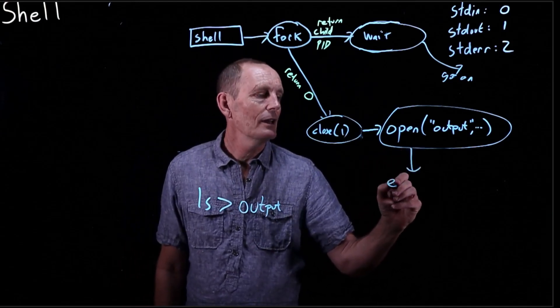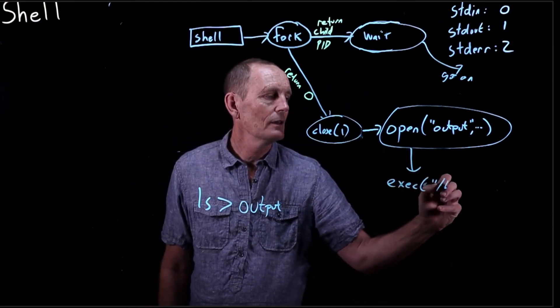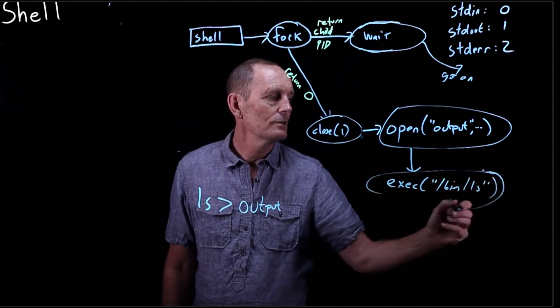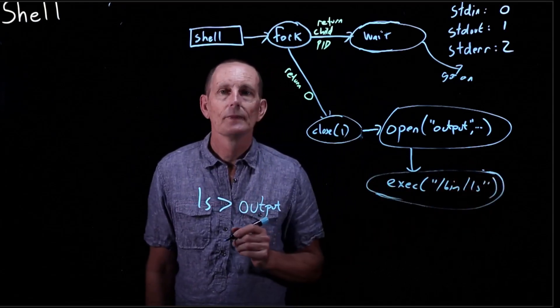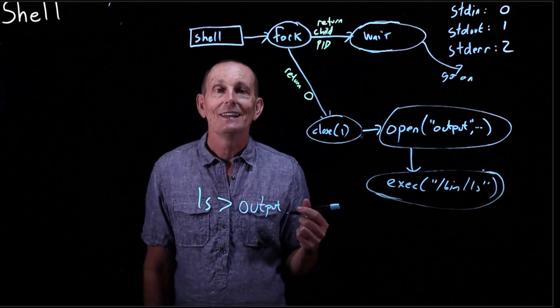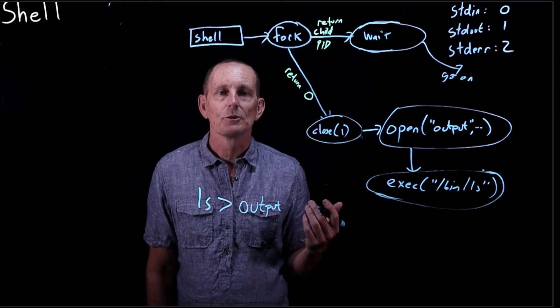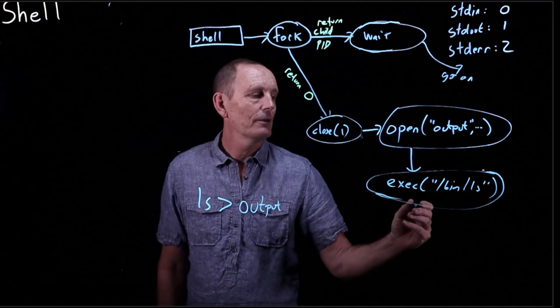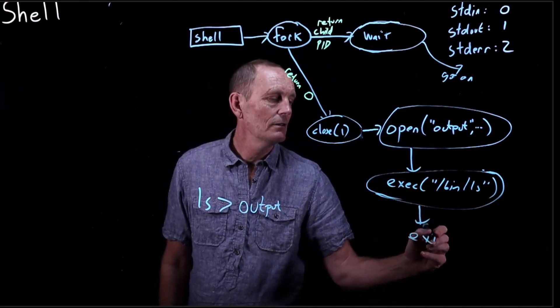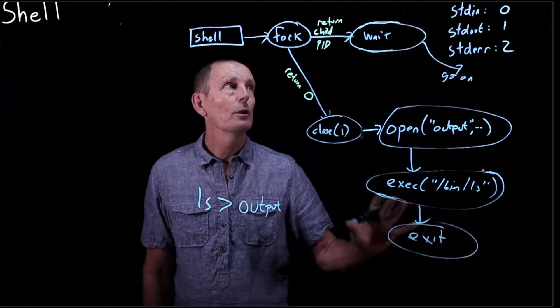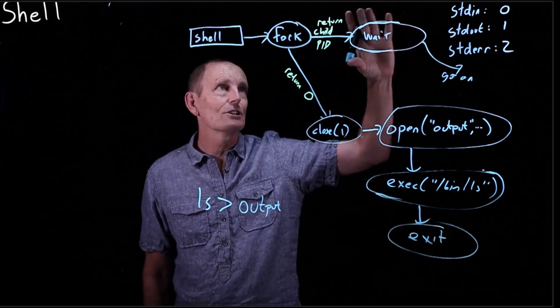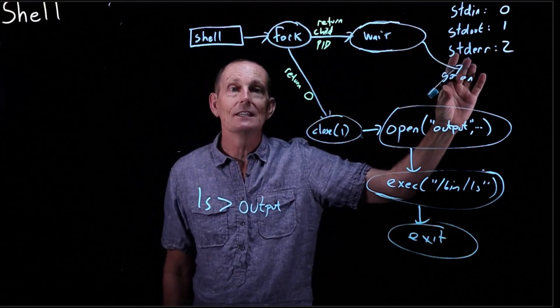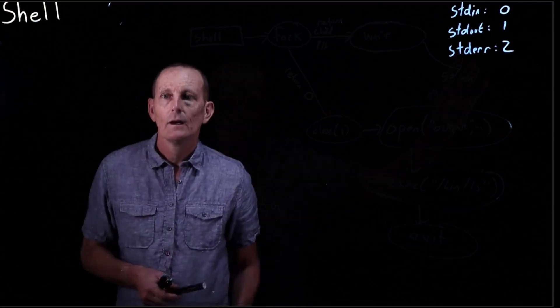At this point now, we can go ahead and exec ls. And now when ls is running, it, as it always does, writes its output to file descriptor 1 to the standard output. But that is now going to not be going to the terminal. It's going to be going to this file. And eventually, that exits. When you return back to the shell, file descriptor 1 hasn't changed. In the shell, we never changed file descriptor 1. So it's going to just continue writing to the terminal.